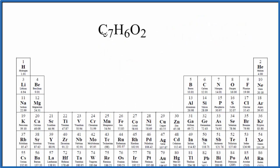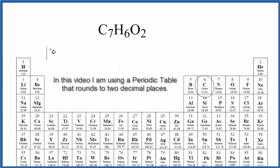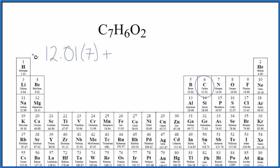So on the periodic table, carbon is 12.01 grams per mole. I won't write grams per mole each time. Let's do that at the end. Seven carbon atoms, so we multiply by seven, plus hydrogen, 1.01 grams per mole, six hydrogen atoms, and then oxygen